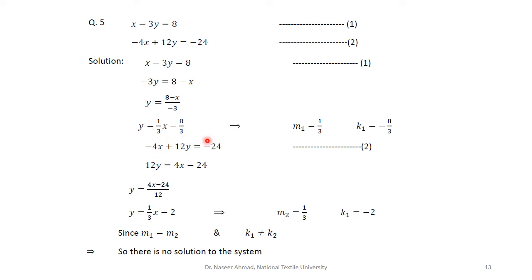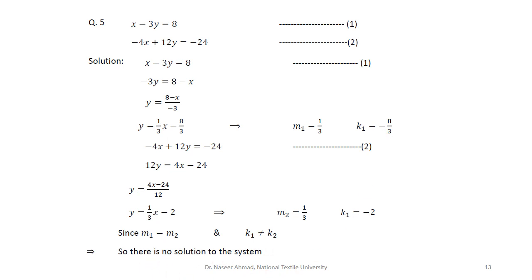For question 5, converting the first equation to slope-intercept form gives m1 equal to 1/3 and k1 equal to minus 8/3. After finding the slope and intercept for equation 2 as well, the two slopes are equal and the two intercepts are unequal. Therefore there is no solution.